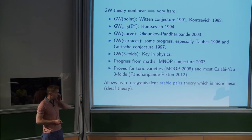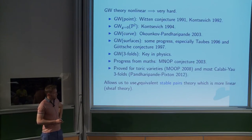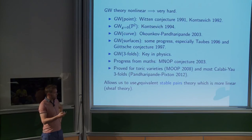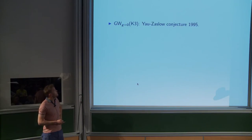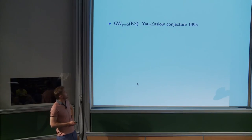The MNOP conjecture has been proved for both toric varieties and most Calabi-Yau threefolds — those that can be degenerated to unions of toric varieties — by Pandharipande, Pandharipande, and Pixton. This talk is an exercise in using that progress to try and compute the Gromov-Witten theory of K3-fibred threefolds. It's still very difficult: you still have to compute the stable pair theory, which is somewhat more linear, but you've still got to compute all these multiple covers.